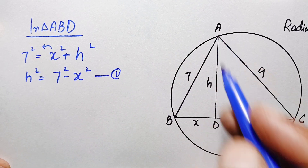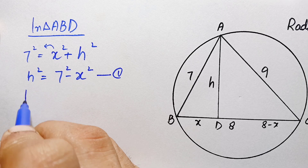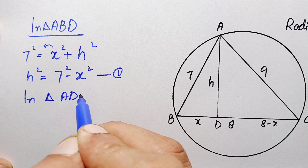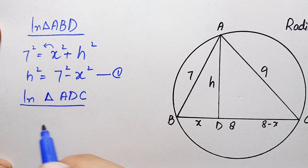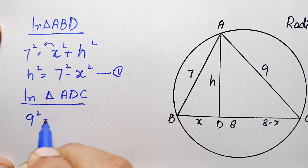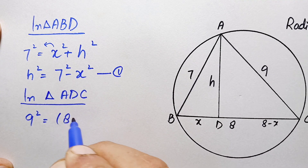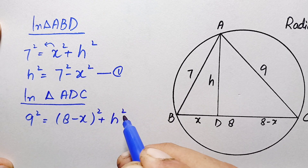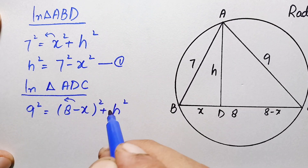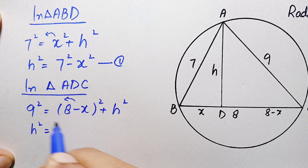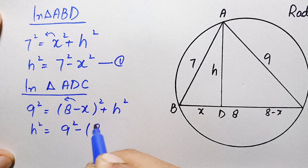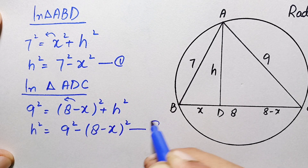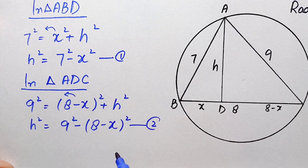Now in triangle ADC, we can write: 9² = (8 − x)² + h². Moving h² to the left hand side, we get h² = 9² − (8 − x)² = 81 − (8 − x)². Let this be equation number two. We will now compare equation one and equation two.